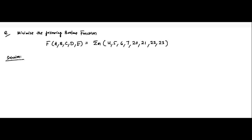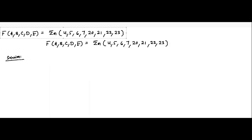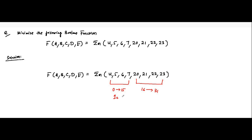This Boolean function consists of two sets of values. The first set, 4 to 7, lies in the range of 0 to 15 and will be simplified using the first KMAP. The second set, 20 to 23, lies in the range of 16 to 31 and will be simplified using the second KMAP.